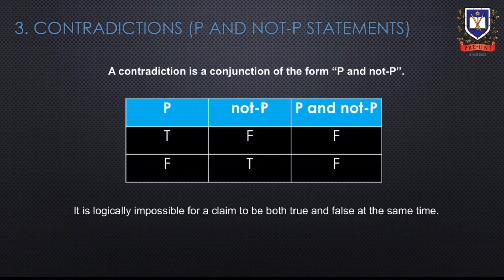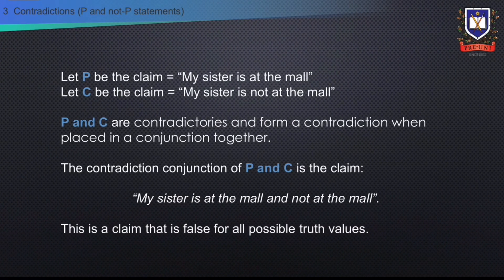Let P be the claim 'my sister is at the mall' and let C be the claim 'my sister is not at the mall.' P and C are contradictories and can form a contradiction when placed in a conjunction together. The contradiction conjunction of P and C is the claim: my sister is at the mall and not at the mall. This claim is false for all possible truths. The truth table shows that all possible truth values of contraries P and C will lead to a false conjunction.